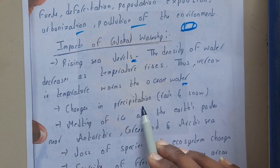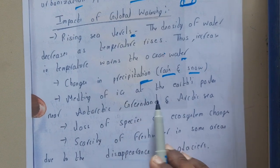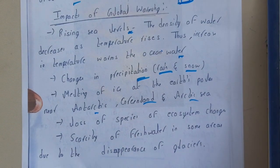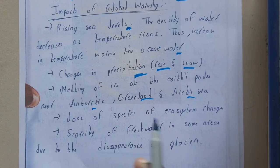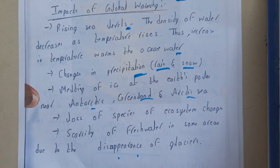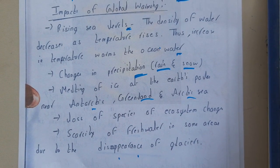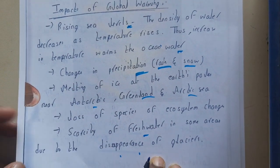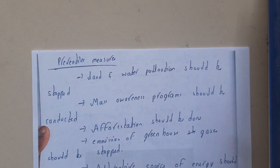Other impacts include changes in precipitation — rainfall and snowfall patterns will completely change. Melting of ice at the Earth's poles near Antarctica, Greenland, and the Arctic seas will increase water levels. Loss of species in ecosystems will occur since animals and plants in cold areas cannot survive rising temperatures and may go extinct. There will also be scarcity of fresh water in glacier areas.